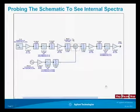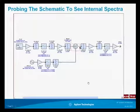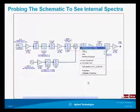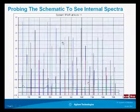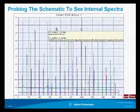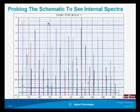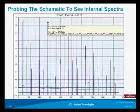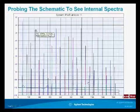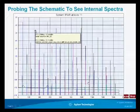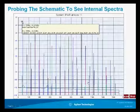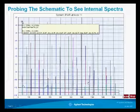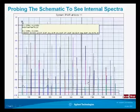Another very powerful feature is the ability to probe the schematic at any point and add a new graph. This one is at the mixer output, and you can see a whole bunch of components here. For instance, there's a third-order product, the sum product at 200 plus 270 megahertz, the LO leakthrough at 270 megahertz, and our desired 70 megahertz output — with the little D in front of it indicating it's the desired product.